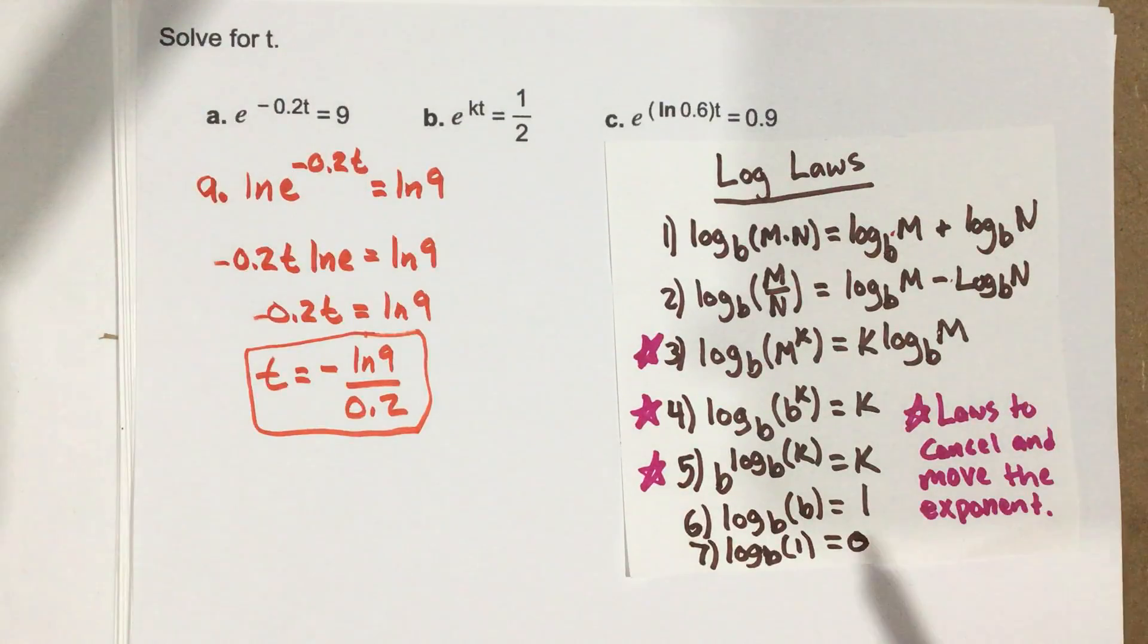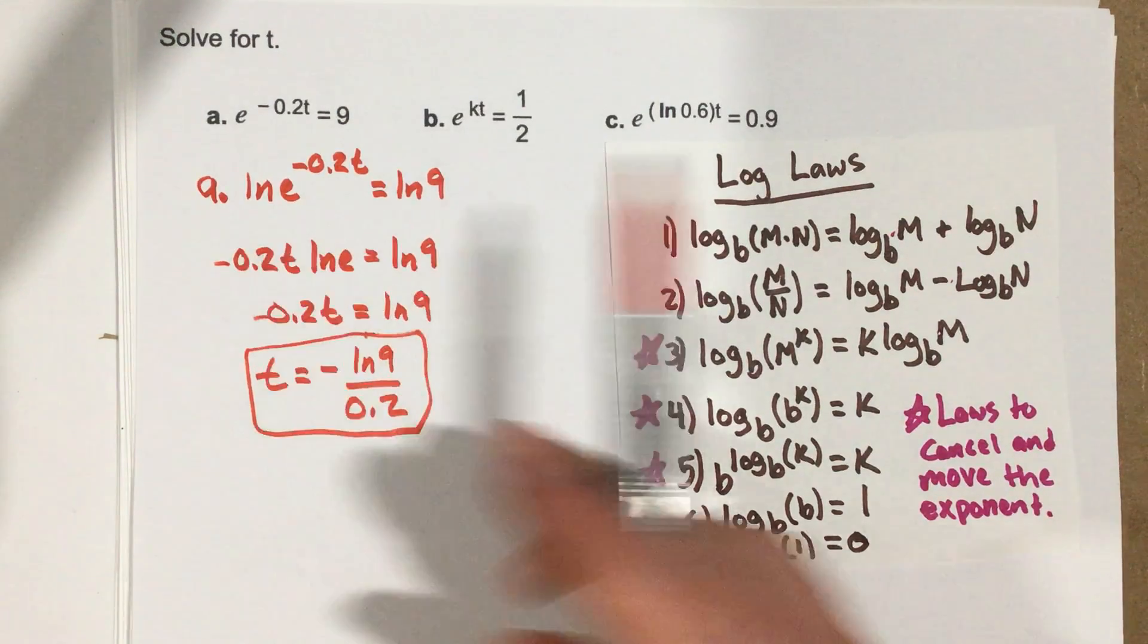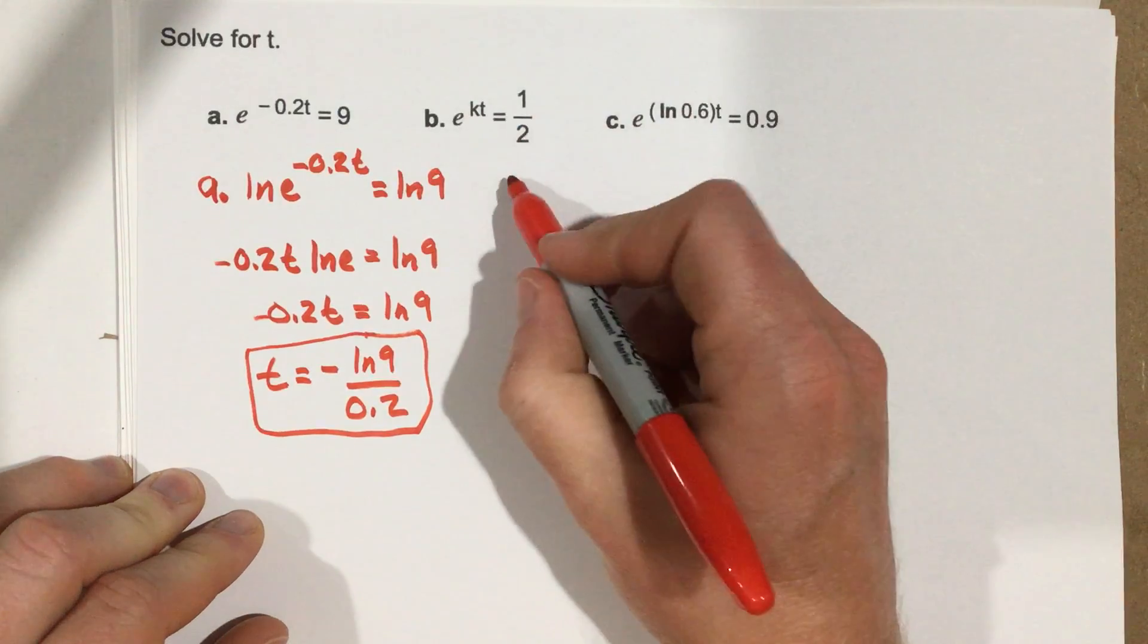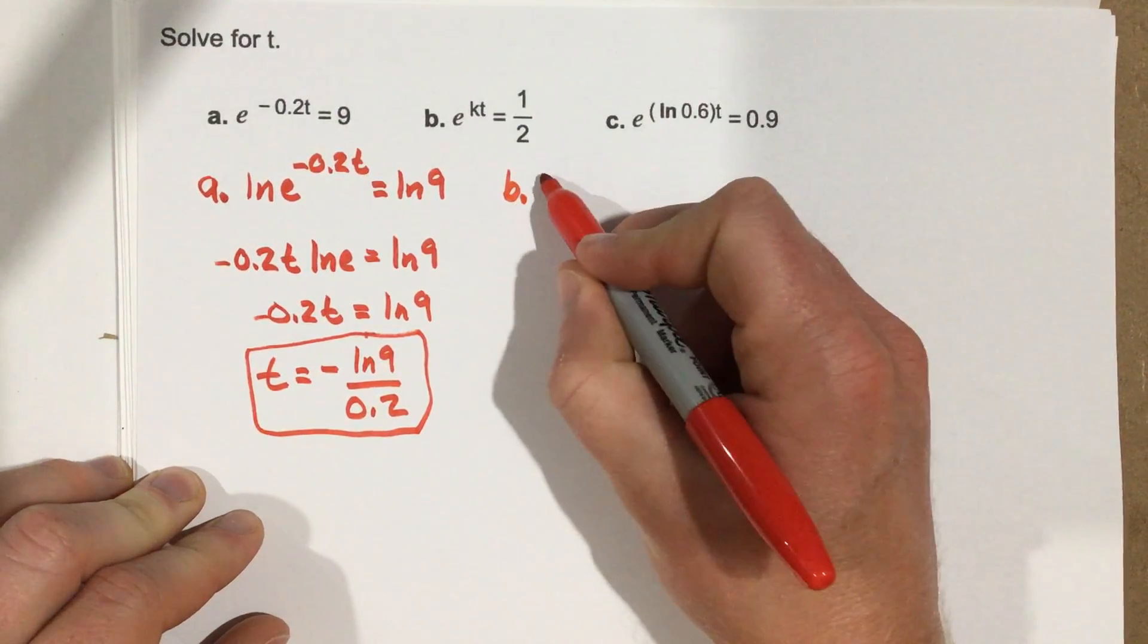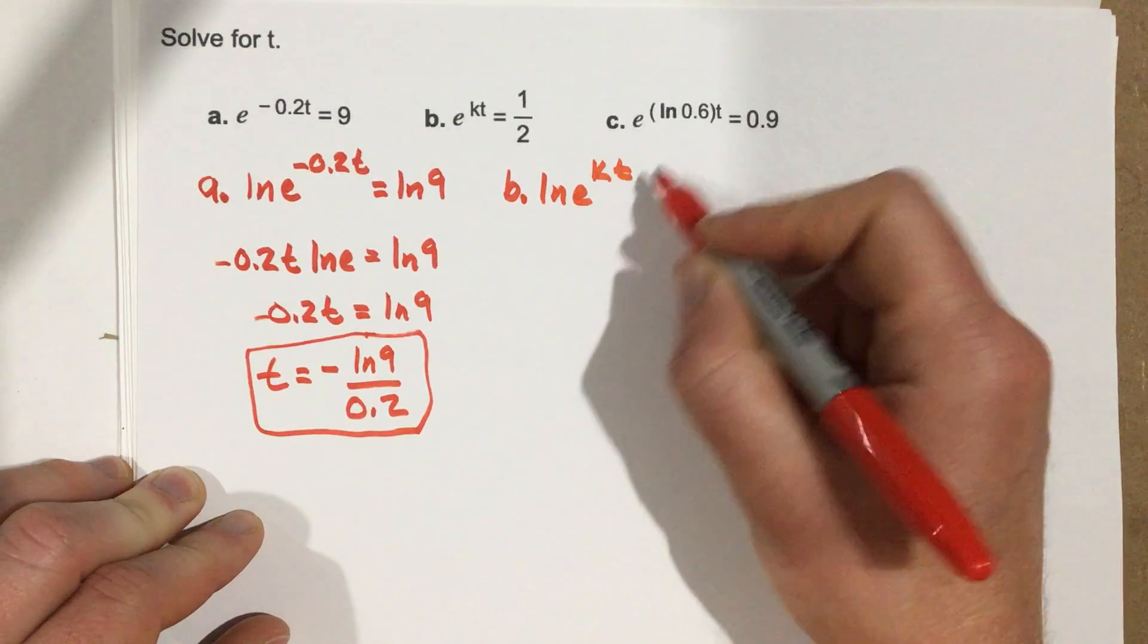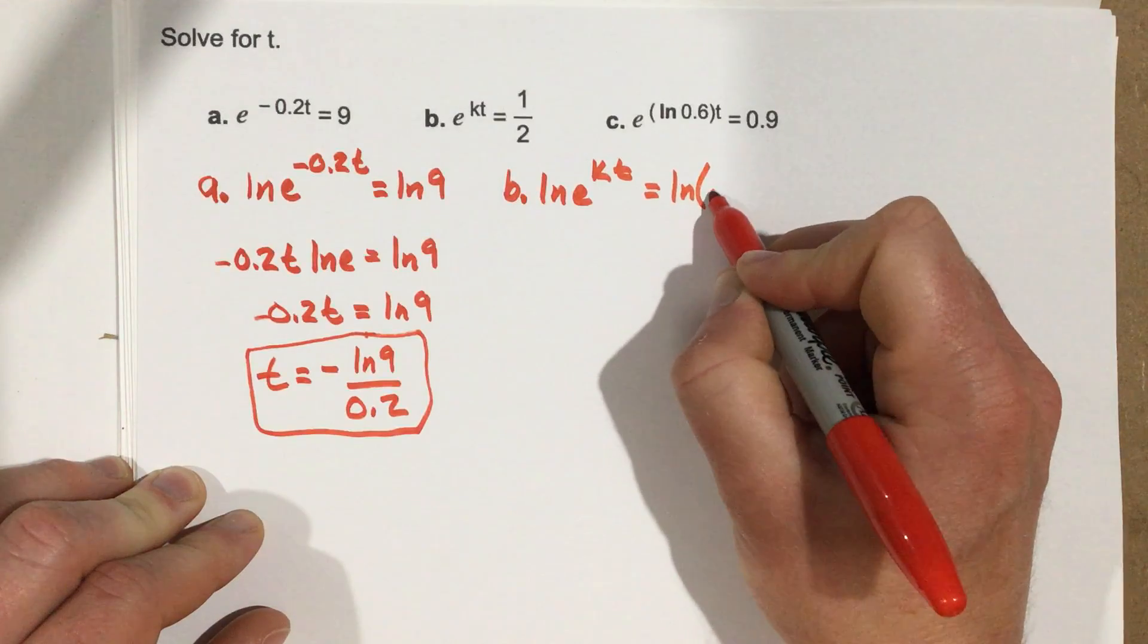Let's go to part b. Now part b, we're going to use the same law that we did in part a. So I'm going to put these log laws away, and we're going to say in part b, we want to take the natural log of e to the kt equals natural log of 0.5 instead of a half.